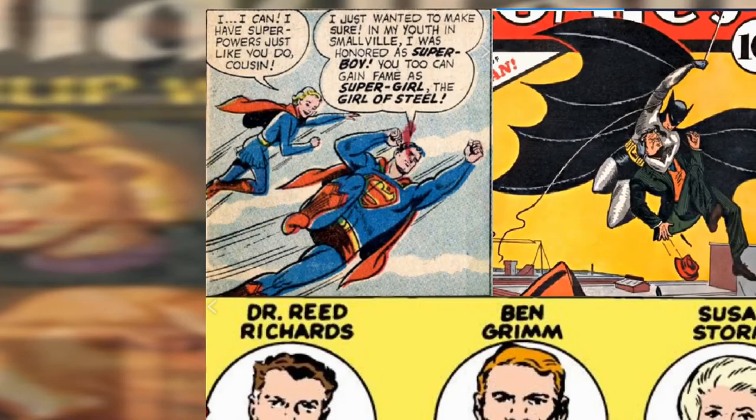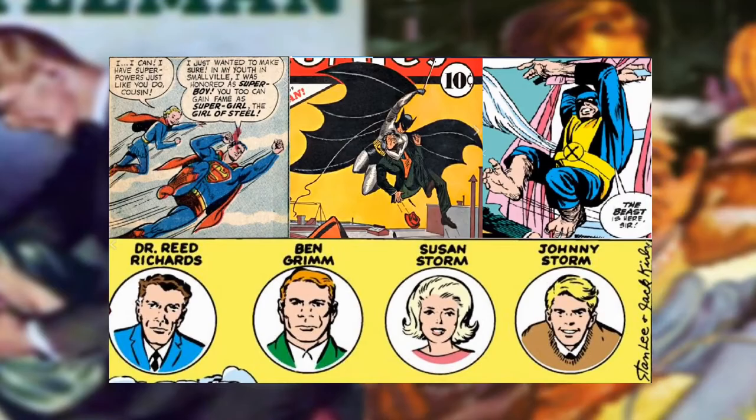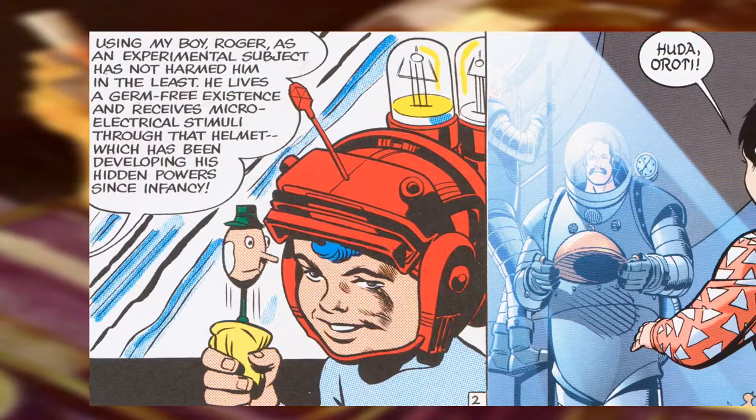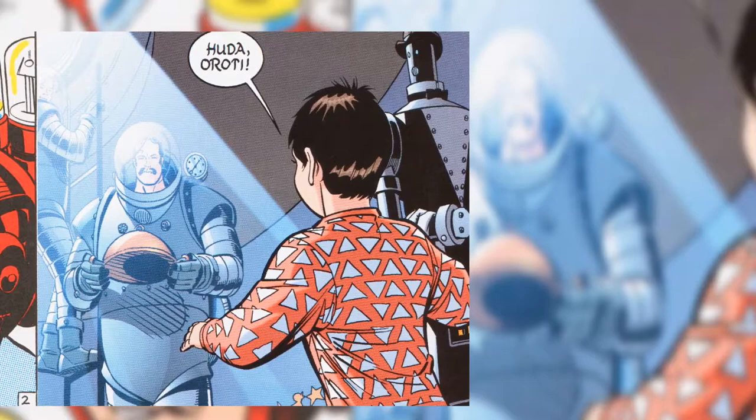If you remember from the Doc Savage episode, him and his Fabulous Five are a precursor to many comic book characters like Superman, Batman, the Fantastic Four, and some of the X-Men. The Savage Gentleman's origin of a professor making his son perfect in isolation from other humans was a plot vehicle that was also used in Private Strong in 1959 by Jack Kirby and Joe Simon, and Alan Moore and Chris Sprouse's Tom Strong in 1999.